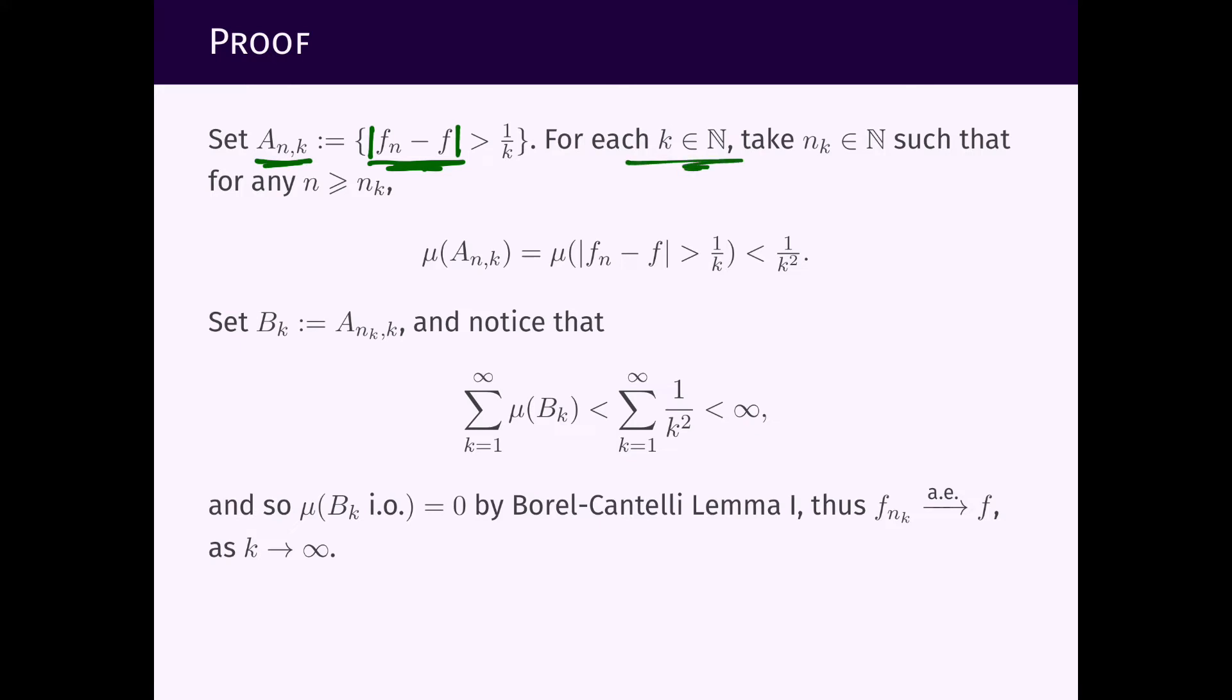So for each k larger than n we can take a number n_k and we can even take this number n_k, we can make it larger than n_{k minus 1} just to make sure this sequence is increasing, such that the measure of this set we can make this measure less than 1 over k squared. Why can we make this measure less than 1 over k squared? Well for each k fixed, once k is fixed this is playing the role of epsilon, this 1 over k here, and convergence in measure means exactly that the measure of this set